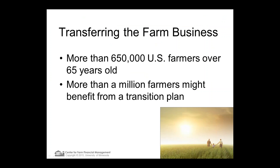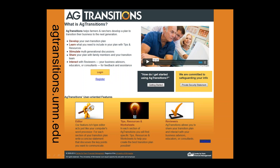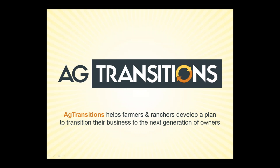We've built a similar tool called Ag Transitions, built on the same platform as AgPlan. It functions the same way but is a transition plan to help producers transition the farm to the next generation. In the United States, we have over 650,000 producers who are over 65 years old, and you should probably start thinking about your transition plan before age 65. We may have as many as a million farmers who could benefit from a transition plan. It's a topic of high interest in the U.S., and I think it's very similar here in Australia.